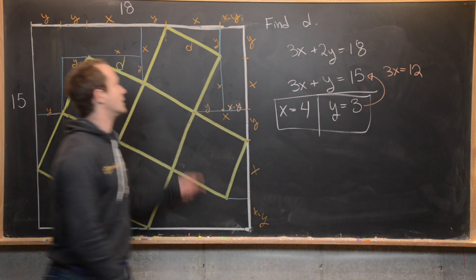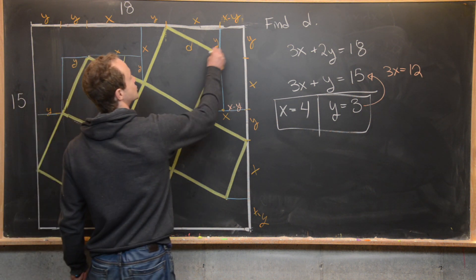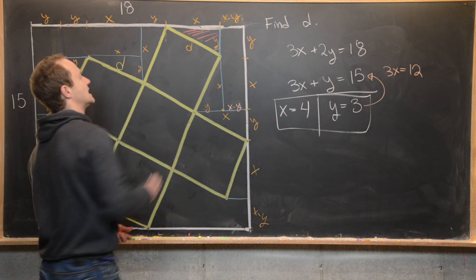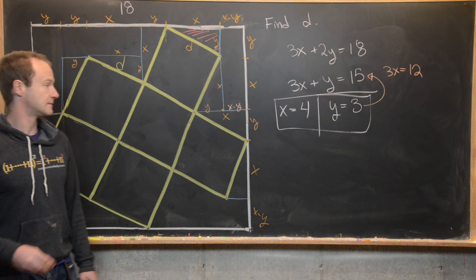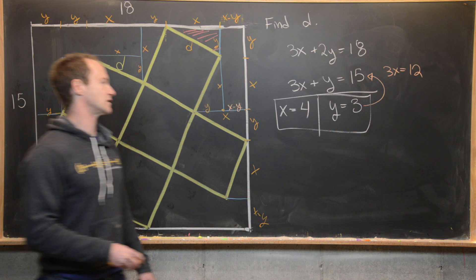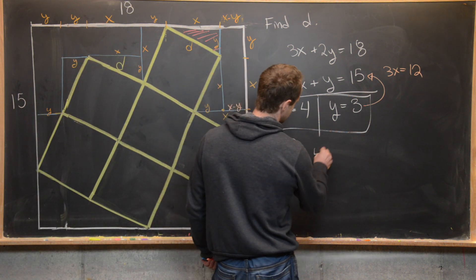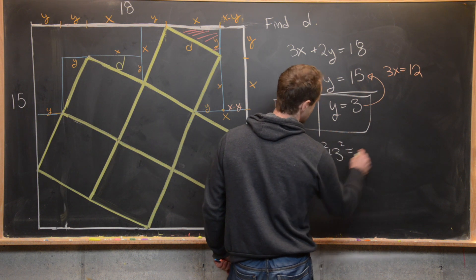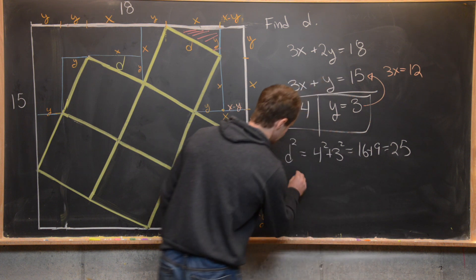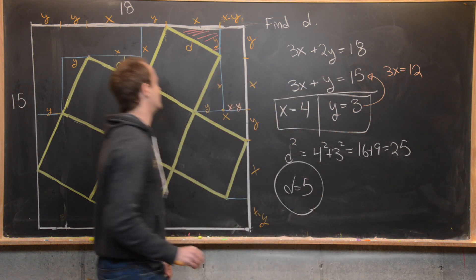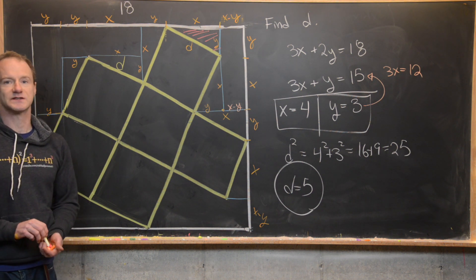Okay, good. So we know these two side lengths. Now we can apply the Pythagorean theorem to this triangle that I'll shade here in red. This is the triangle that we used over and over and over again. So we know that X squared plus Y squared equals D squared. So that means D squared equals four squared plus three squared, which is 16 plus nine, which is 25. So that tells us D is equal to five. So the length of all of these squares is five. And that's a good place to stop.